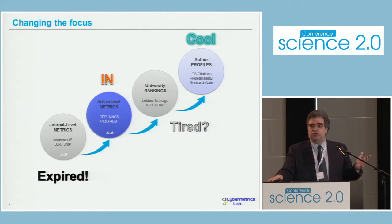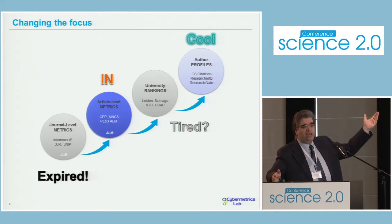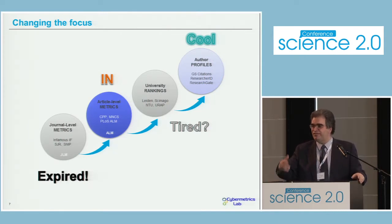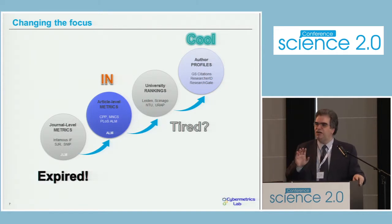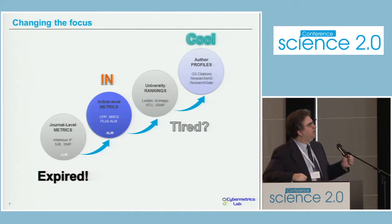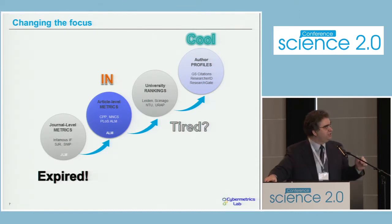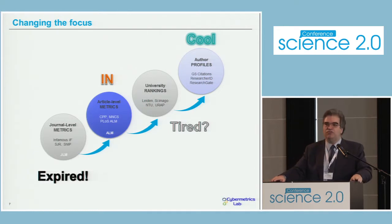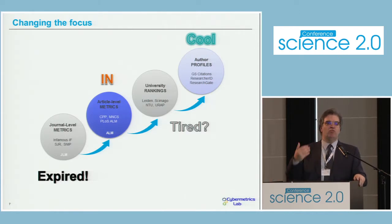There are two developments we need to consider. The first one is we are moving from journal-level metrics — of course, impact factor, which is probably no longer as important as in the past — to article-level metrics. Article-level metrics, ALM, is not the same as altmetrics. ALM metrics can include article-level metrics, but it is not the same topic. We have university rankings, which I will talk about later. And perhaps now we are in a new scenario where author profiles and author-level metrics are becoming more and more important.